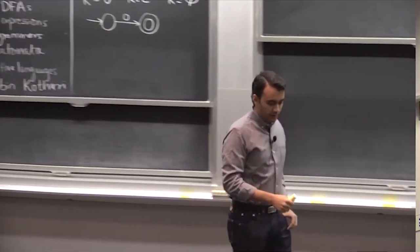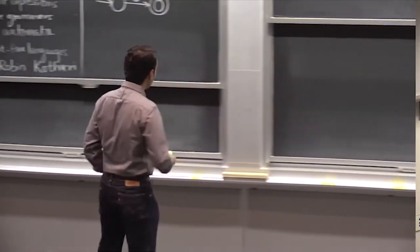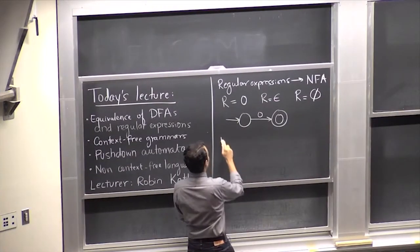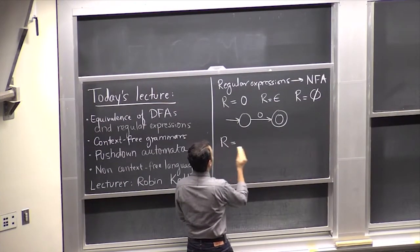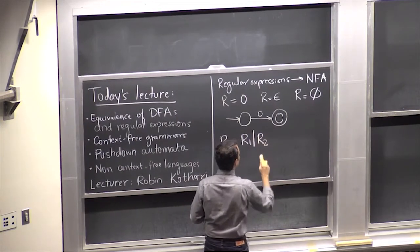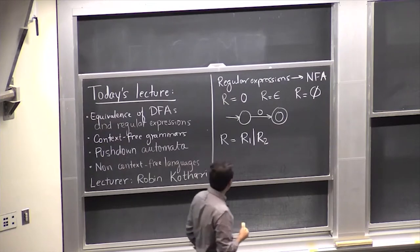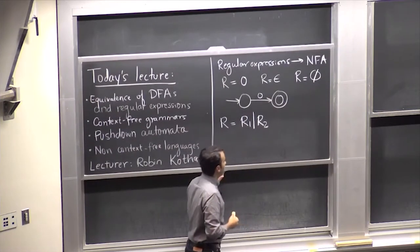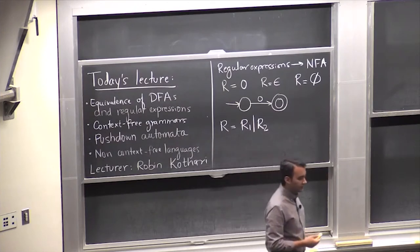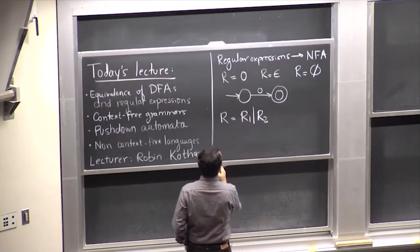The more complicated operations allowed in regular expressions are taking the union of two regular expressions. So you have some regular expression R which is the union of two regular expressions R1 and R2. How do we do this? Let's assume that we have NFAs for both R1 and R2, and from this we want to construct something for the union of R1 and R2.